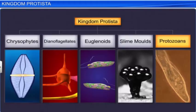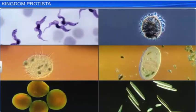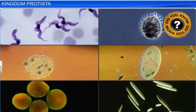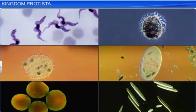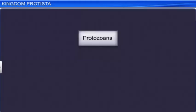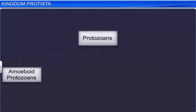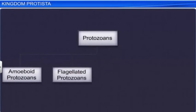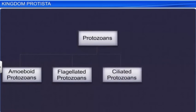Now, let us learn about the last type of protists, namely protozoans, that are believed to be primitive relatives of animals. Did you know the word protozoans means the first animals? All protozoans are heterotrophic and live as predators or parasites. The protozoans are classified into four types: amoeboid protozoans, flagellated protozoans, ciliated protozoans and sporozoans.